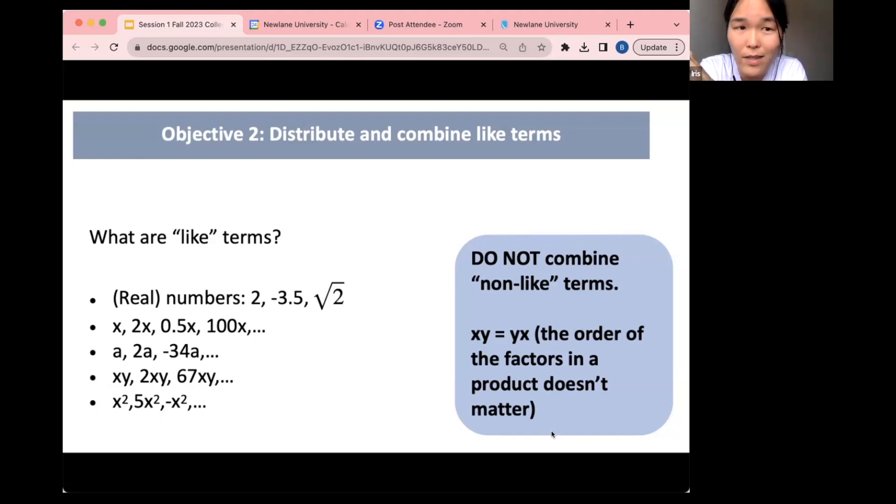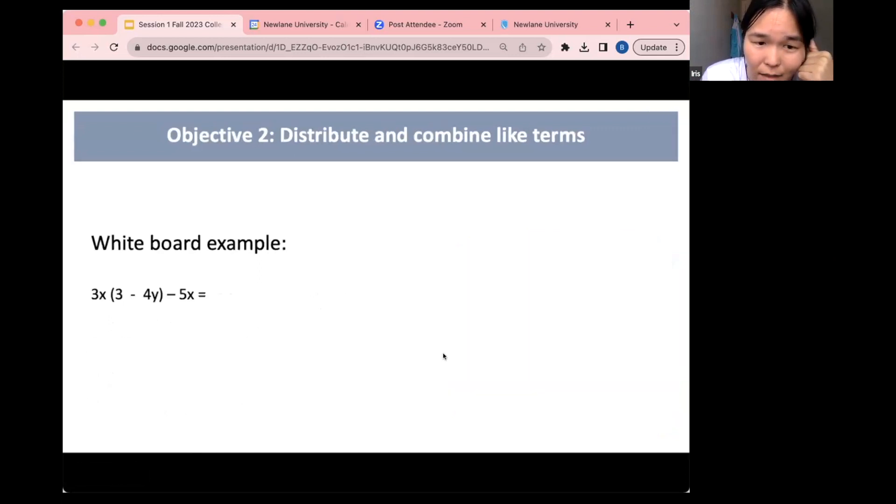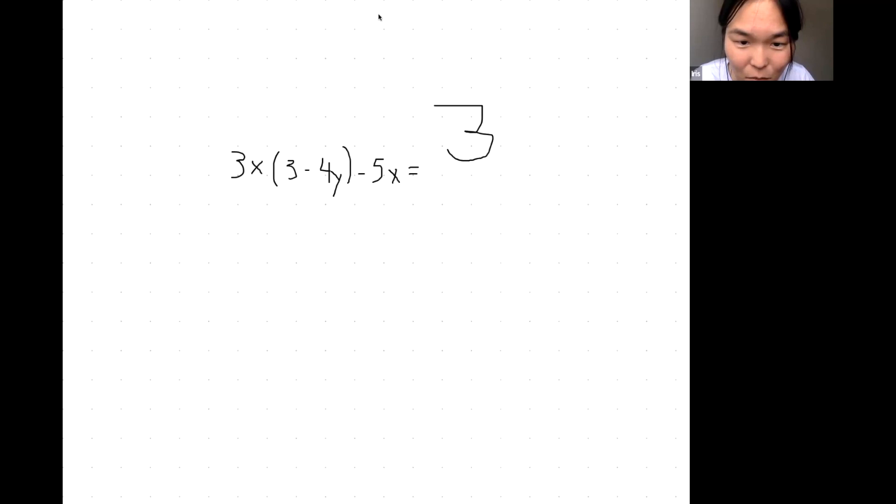And then x times y is the same as y times x, so these two you could switch them so that the letters show up in the same order in the multiplication. That makes things slightly easier. So what I said is xy is equal to yx—you could switch the order of the product. So I think that next exercise I show what is combining like terms, right? And then this is when it's good to use the whiteboard. Here's what we have: 3x(3 minus 4y) minus 5x.